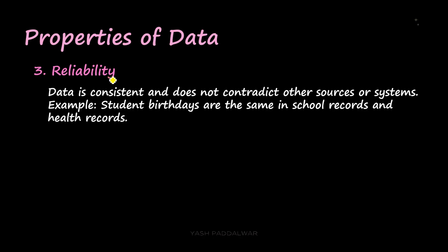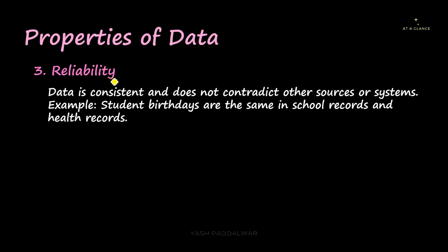This is the most important factor we have to consider whenever we talk about any sort of data. Data is consistent and does not contradict other sources or systems. Whenever we talk about a particular data, that data must be trustworthy. It should be reliable. For example, student birthdays are the same in school records as well as in the health records. Let's say the date of birth of a student is X in school.